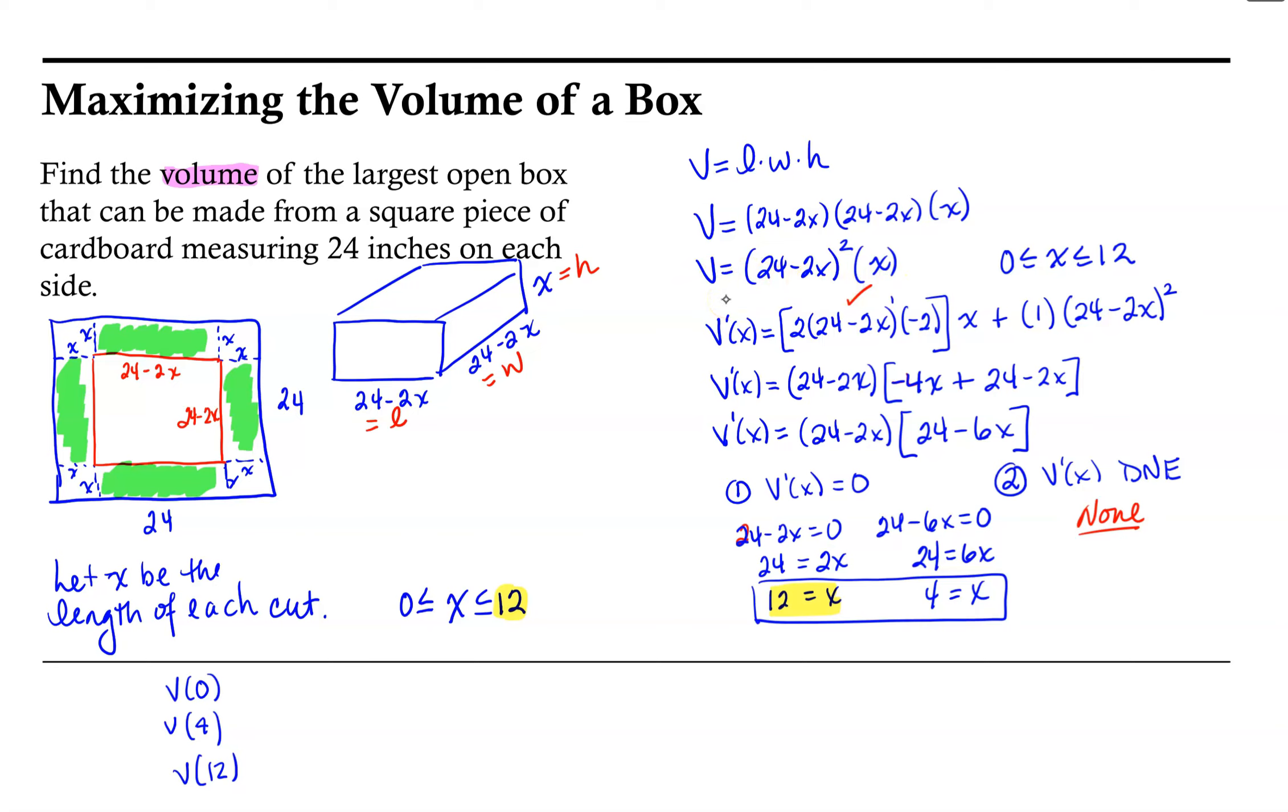And recall our volume function is here. So our volume at 0, at x equals 0, or cut is equal to 0, would be 24 minus 2 times 0 squared times 0, and that is equal to 0. So the volume of the box would be 0 cubic inches.